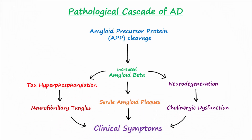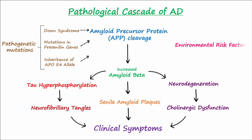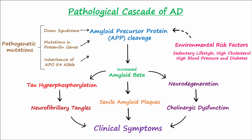Here is a summary of the pathological cascade of AD. Pathogenetic mutations and environmental factors both play a role. The increased amyloid beta leads to formation of plaques and tangles that bring about neurodegeneration and cholinergic dysfunction, leading to the clinical symptoms of AD.